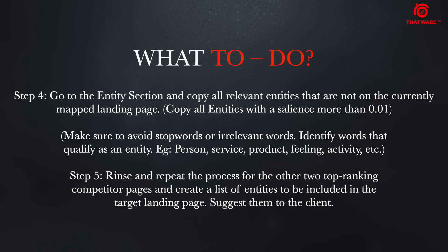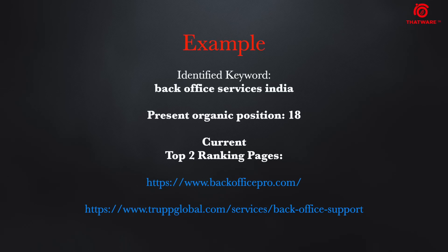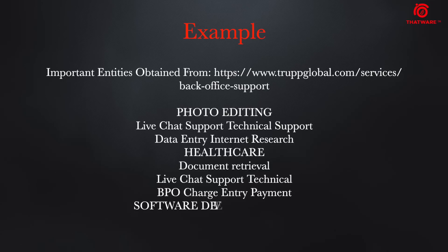Repeat the same for other low-hanging keywords and find opportunities as well. Here is an example: we identified the keyword 'back office services in India', with a current organic position of 18. The current top two ranking pages are backofficerepro.com and troopglobal.com/services/back-office-support. Important entities obtained from Back Office Pro include video editing, image editing, audio editing, and so on. Important entities from troopglobal.com include photo editing, live chat support, technical support, data entry, internet research, and so on.